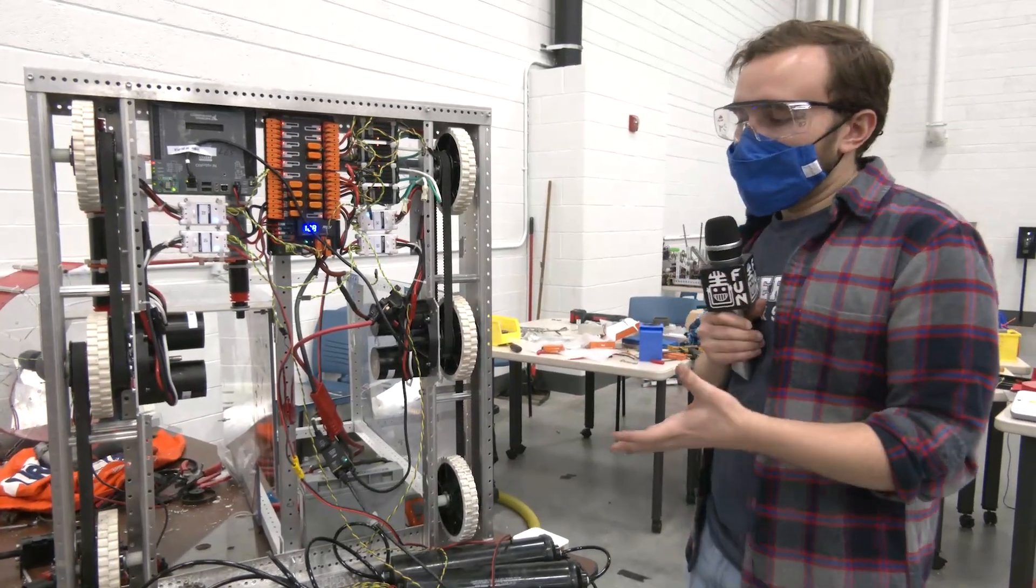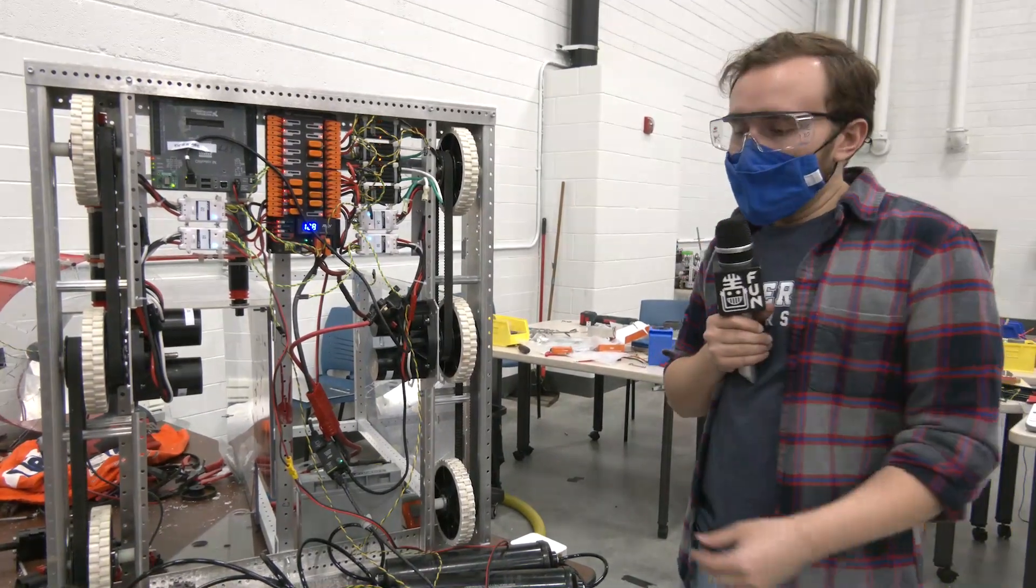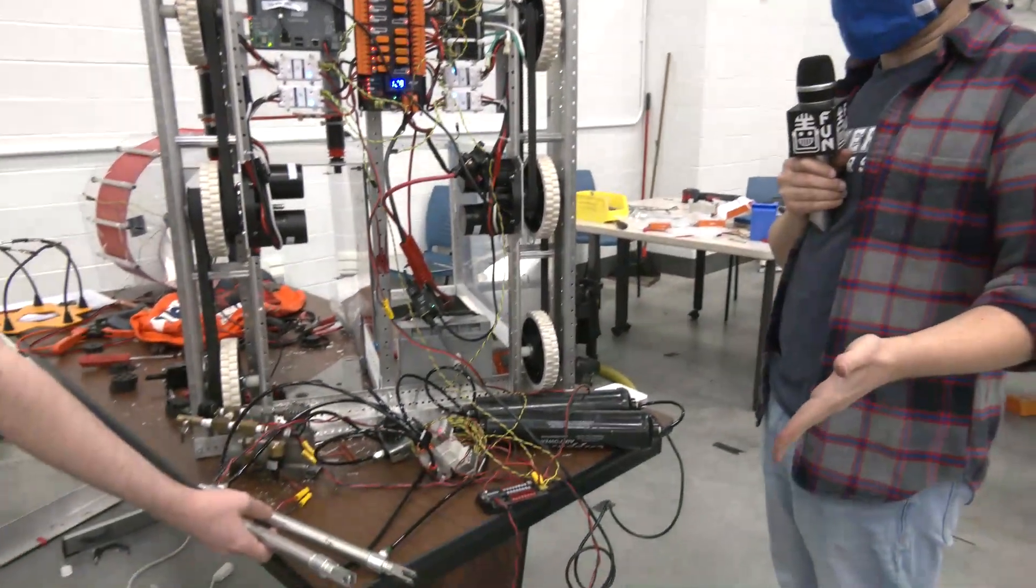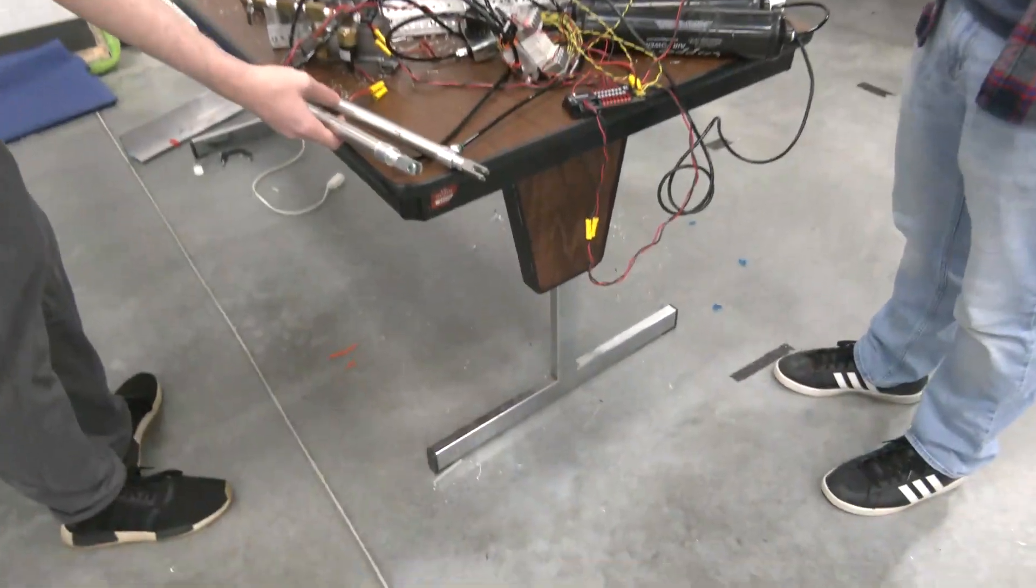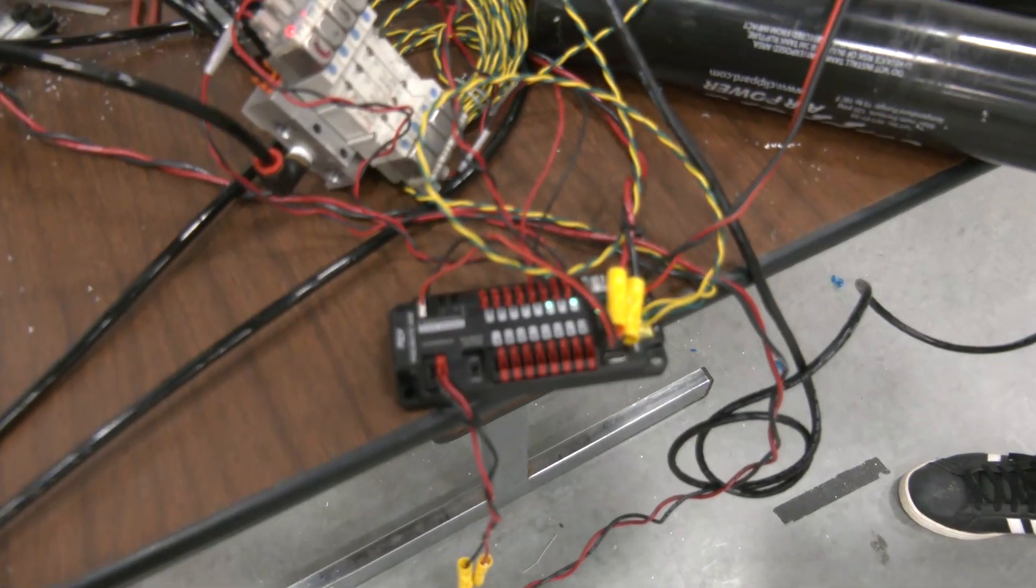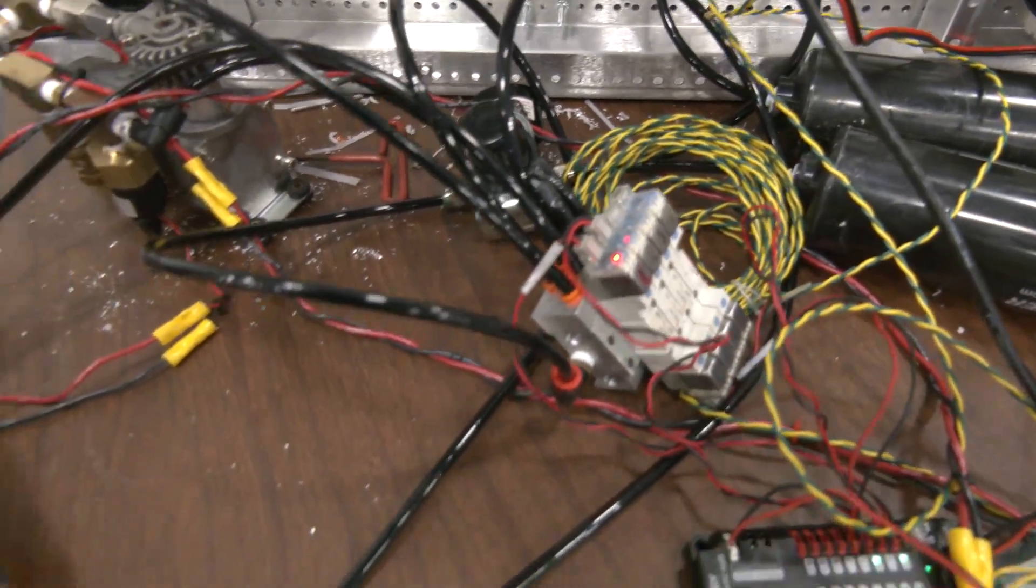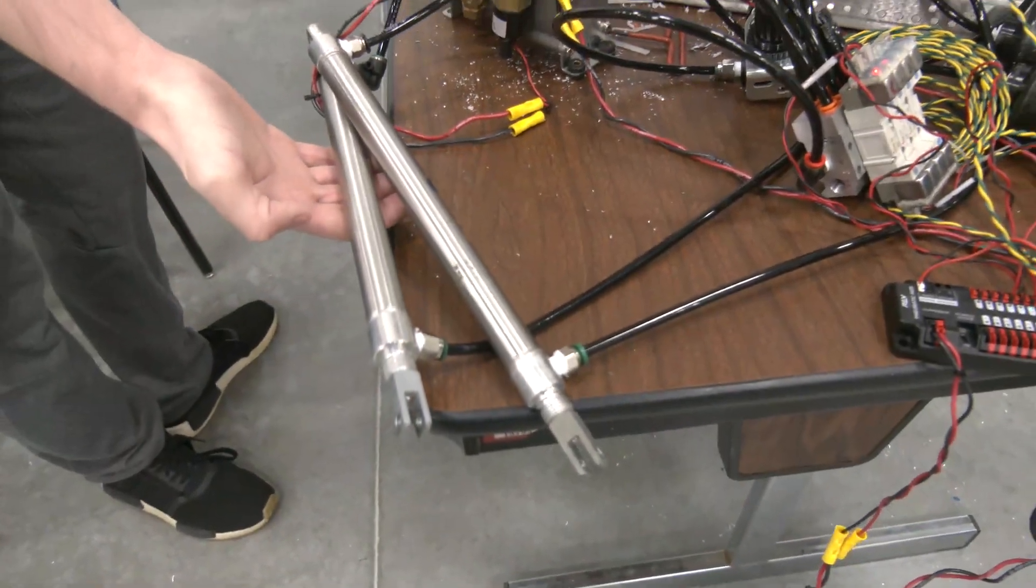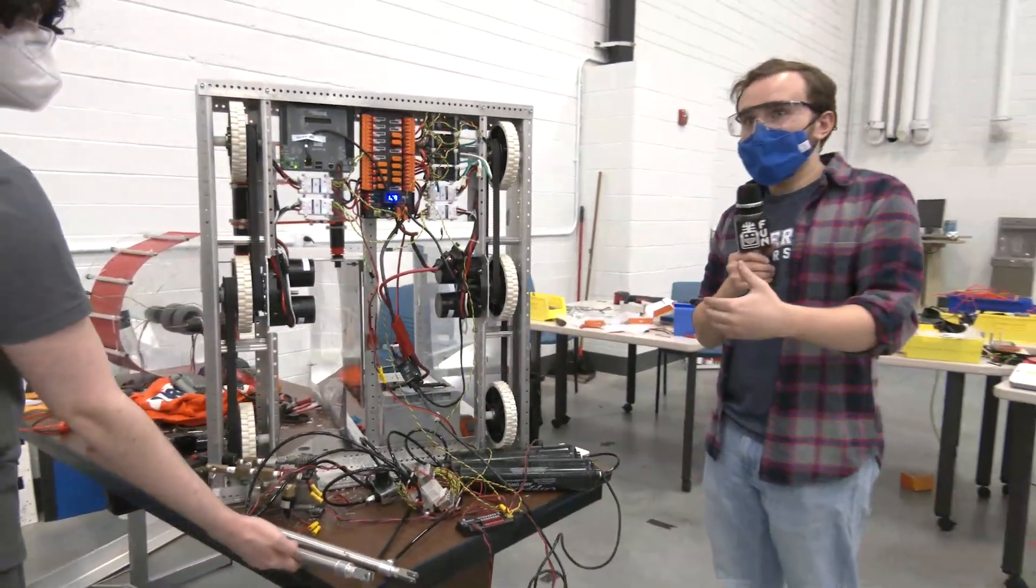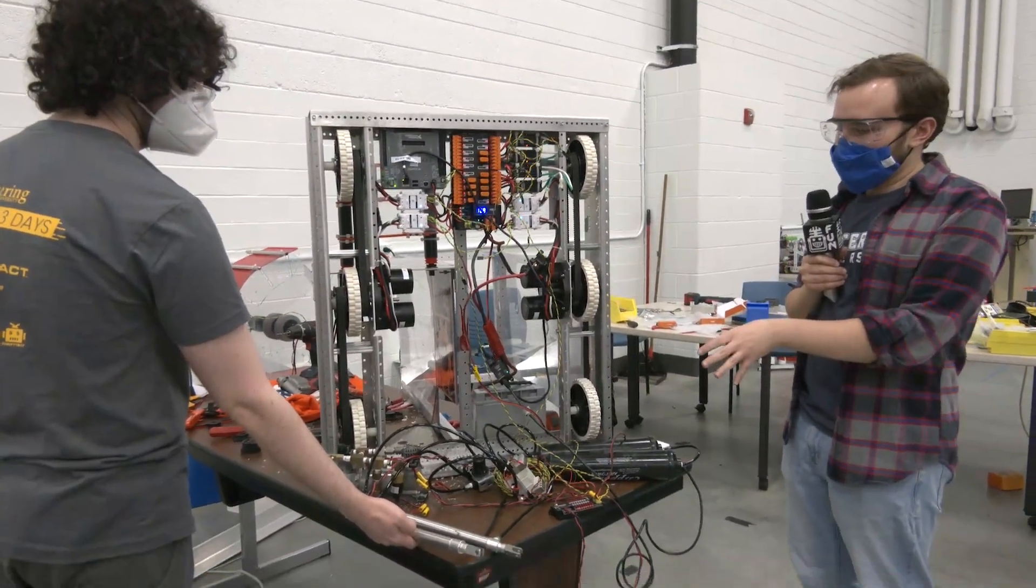We decided to use pneumatics rather than some sort of motor electrical due to the speed that you can get with that. These pneumatic cylinders can cover that full eight-inch stroke in about half of a second. So to get over and intake those game pieces, it's going to be much quicker using a system like this rather than a motor. A lot of motors we wouldn't be able to achieve that speed, and if we were achieving that speed we'd be using a very hefty motor to do so. So we're going to use pneumatics for that.